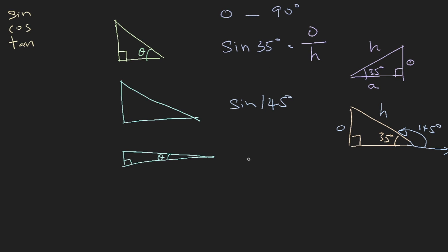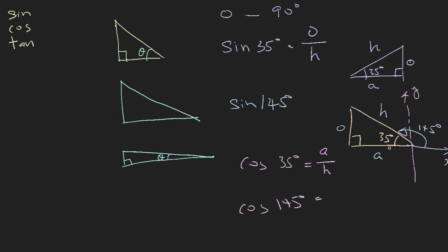Cosine of 35 degrees, looking at this triangle, is the ratio of the adjacent side over the hypotenuse. Now what about cosine of 145 degrees? It is also the ratio of the adjacent side over the hypotenuse, but if you look at the x-y axis, the adjacent side here is a negative value — this side is past the origin on the negative side. The hypotenuse is always a positive value, so you will have a negative value. Cosine 145 degrees equals negative cosine 35 degrees.